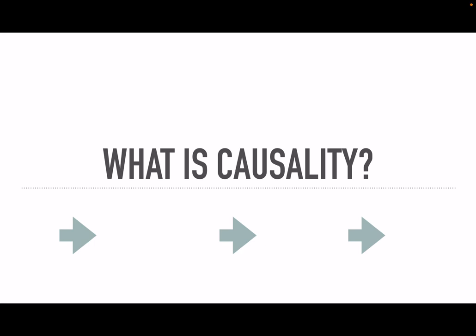Causality is a big word. Pretty much what it means is what causes what. When we talk about causality in research, what we're trying to do is understand the relationships between causes and effects. We know that things happen in the world, and we know that other things cause those things to happen. Oftentimes, social science researchers are driven by the notion to know what causes either things they like or things they dislike, because if you know what causes them, maybe you can impact the outcome.